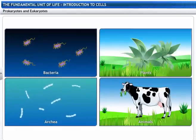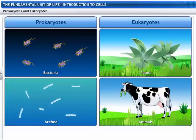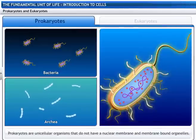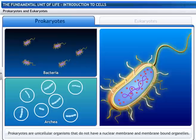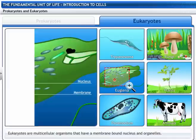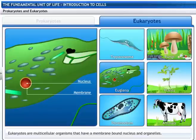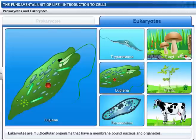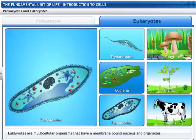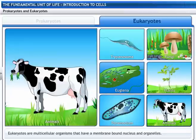Living organisms are also classified as prokaryotes and eukaryotes based on the organization of cellular structure. Prokaryotes are unicellular organisms that do not have a nuclear membrane and membrane-bound organelles. For example, bacteria and archaea. Eukaryotes are characterized by membrane-bound nucleus and organelles. Eukaryotes can be unicellular, such as trypanosoma, euglena, paramecium, or multicellular such as fungi, plants and animals.